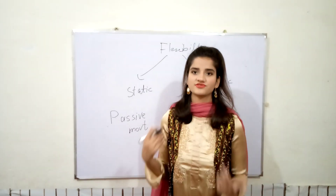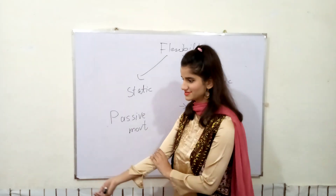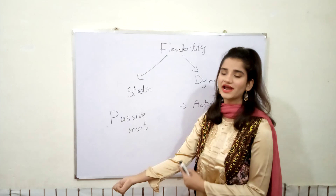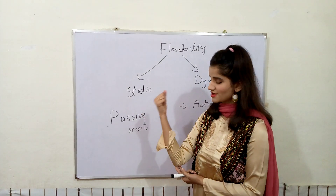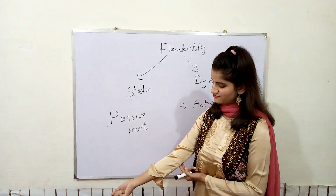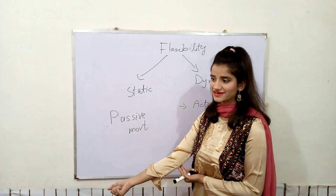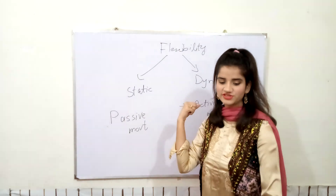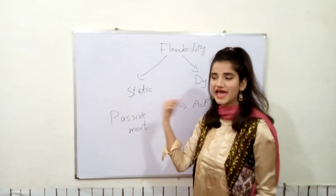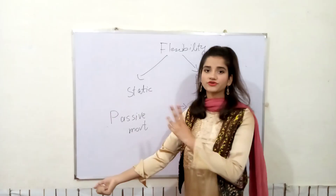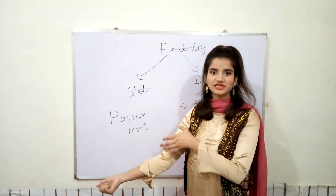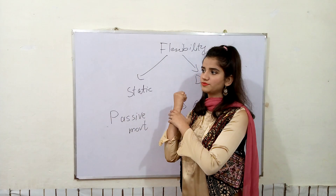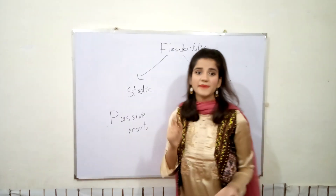Active movement is done by the person himself or herself. For example, this is the elbow joint. The movement I am producing right now at this joint is elbow flexion, and it is totally active. But if this movement were being produced by any other person — if I do not contract my muscle actively — then it would be considered passive movement.